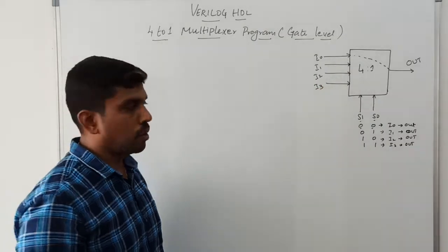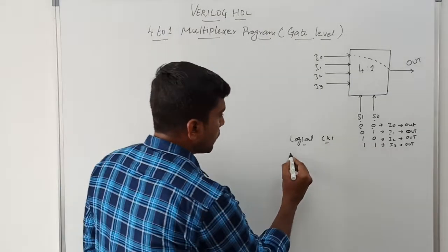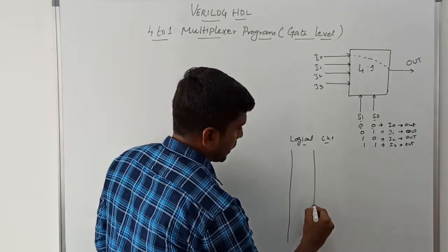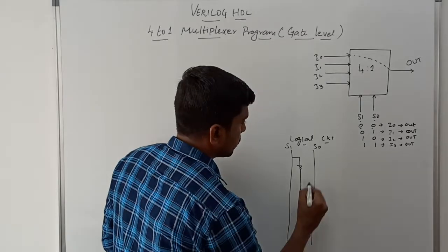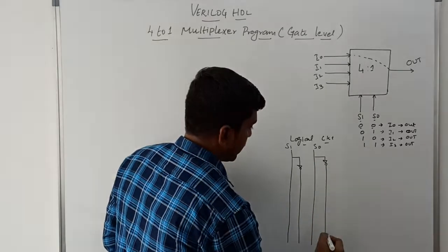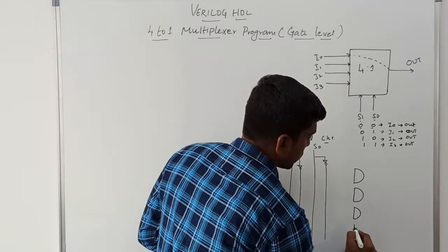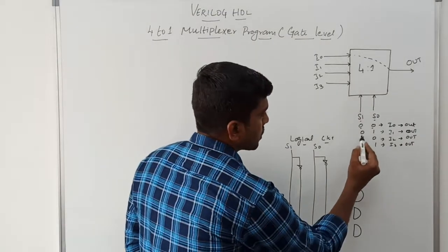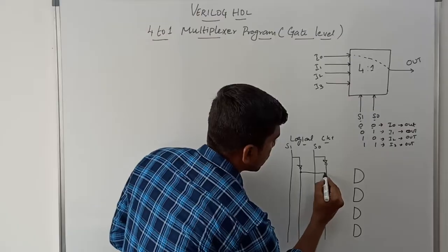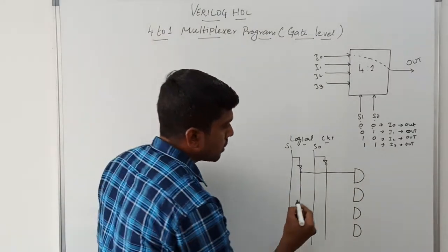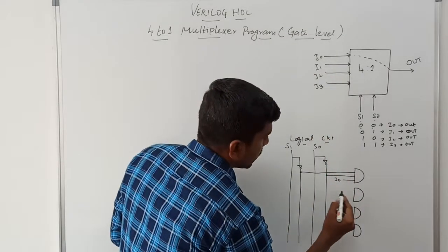This block diagram is converted into a logical circuit. In the logical diagram of the 4-to-1 MUX, first we draw the selection lines S1 and S0, then the complement of S1 and complement of S0. Then I draw 4 AND gates — these are 3-input AND gates. For the first AND gate, S1=0 and S0=0, so we take the input from the output of the NOT gate. The third input is I0.